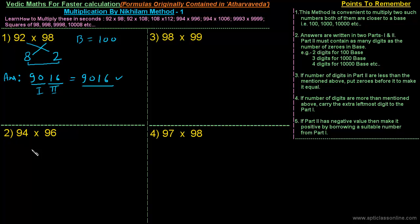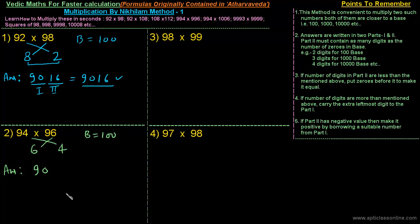Next question: 94×96. Again, the base is 100. The first number, 94, is 6 less than 100; and 96 is 4 less than 100. The first part of the answer is the difference of 94 and 4, or 96 and 6, which is 90. The second part is 6×4 = 24. The second part already contains two digits, so the final answer is 9024.